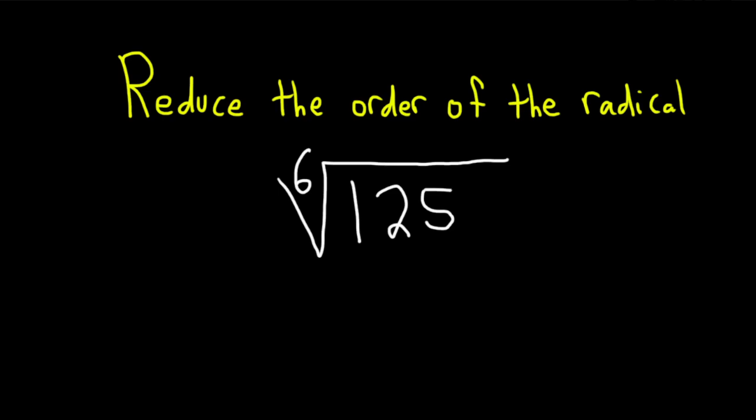Hi, in this problem we're going to reduce the order of the radical. So the idea is to first basically write this to a power, and then manipulate the radical.